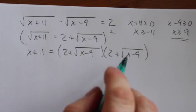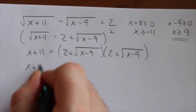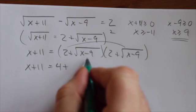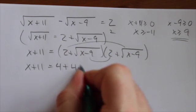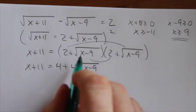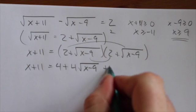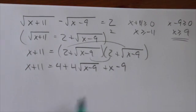So we have to distribute those out. This becomes x plus 11 is equal to 4 plus 2 root x minus 9 plus 2 root x minus 9, so 4 root x minus 9. And then when the x minus 9 times x minus 9 is multiplied out, we're just going to get plus x minus 9.